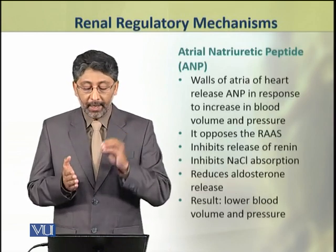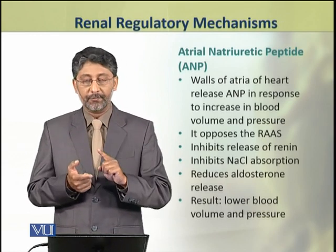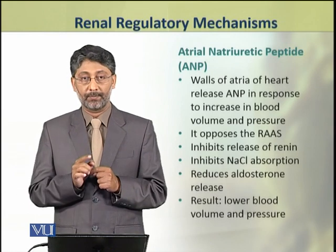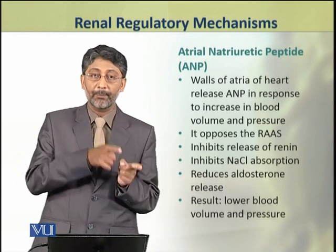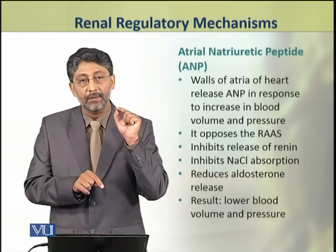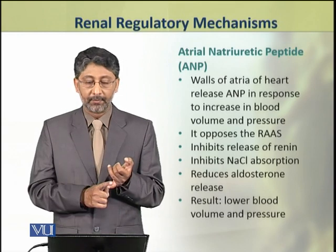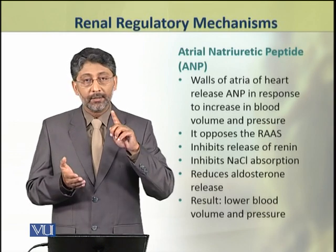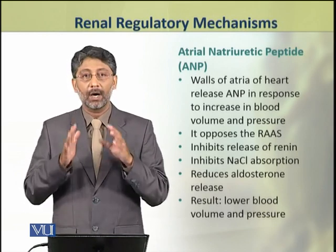The atrial natriuretic peptide is released from the walls of the atria of the heart in response to increased blood volume and pressure. Since RAS is released in response to decreased blood volume or pressure, ANP is released under the opposite conditions, and therefore its functions are also opposite to those of RAS. It inhibits the release of renin, inhibits sodium and chloride ion reabsorption, and reduces aldosterone release. As a result, blood volume and pressure are lowered.